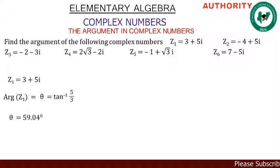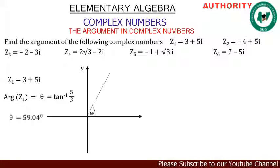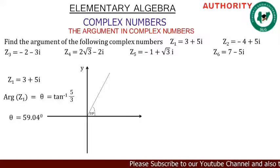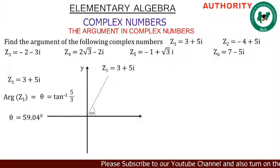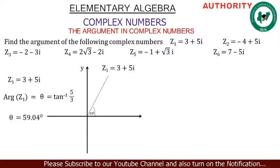Draw your x and y axis and represent z1 on an Argand diagram. We have the point z1 = 3 + 5i, and our θ is 59°, so we have the angle here in the first quadrant.